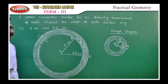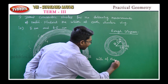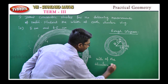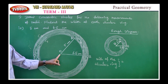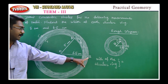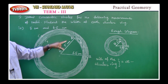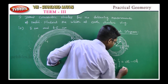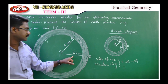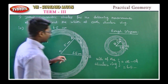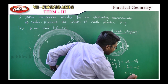The width of the circular ring equals the outer radius minus the inner radius. That is OB minus OA. OB is the outer radius, 6.5cm; OA is the inner radius, 5cm. So 6.5 minus 5 equals 1.5 centimeters. The width of the circular ring is 1.5cm.